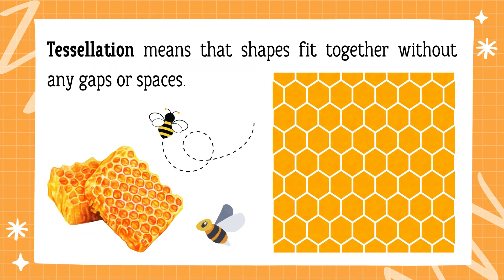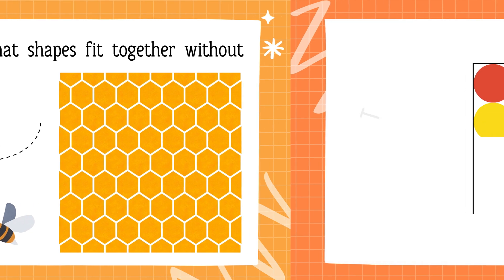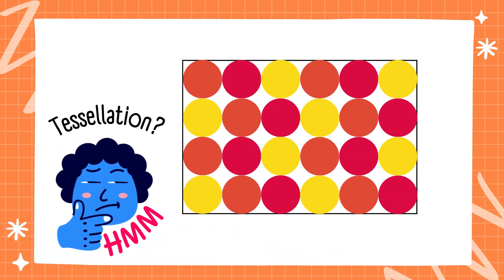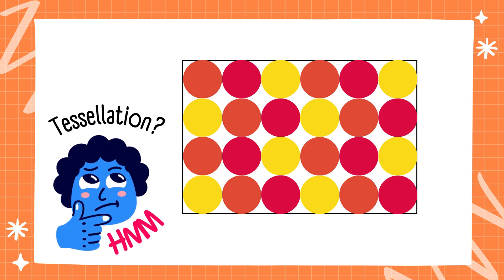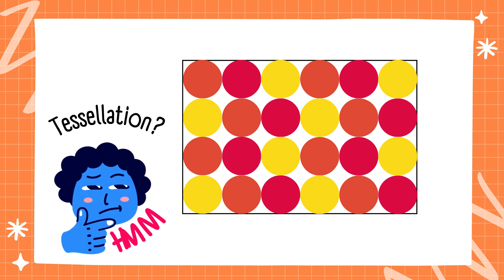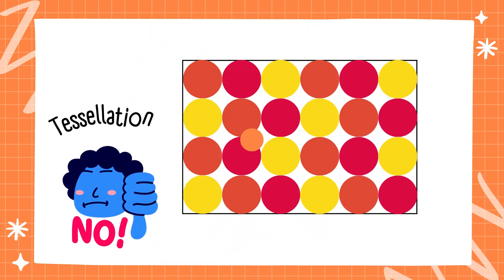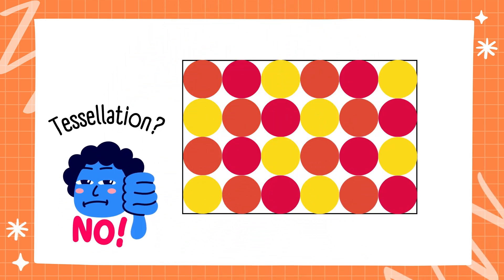Another example is honeycomb. Bees make their honeycomb with hexagons, and the hexagons fit together without any gaps. What if we try to do tessellation with circles? Does it work? No.